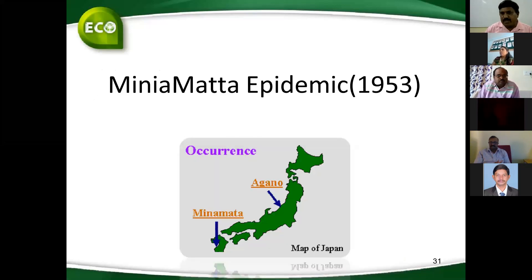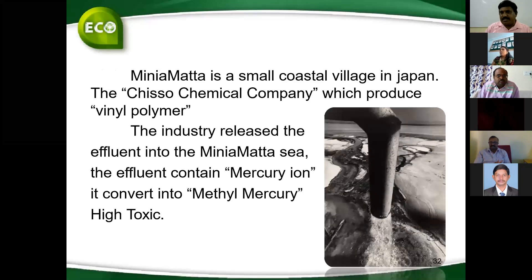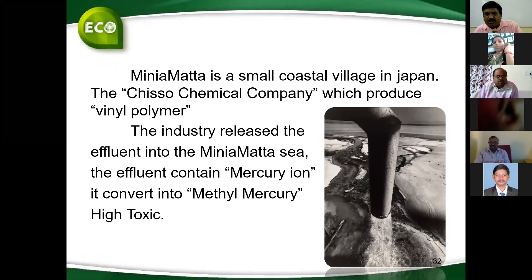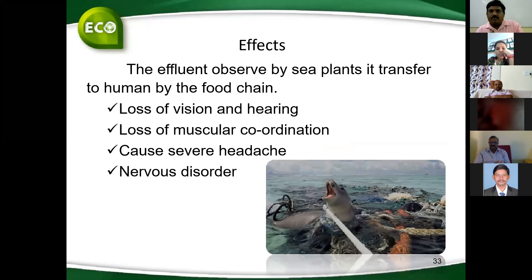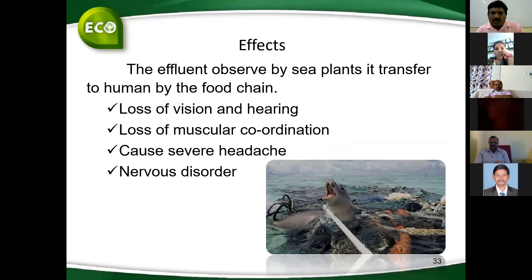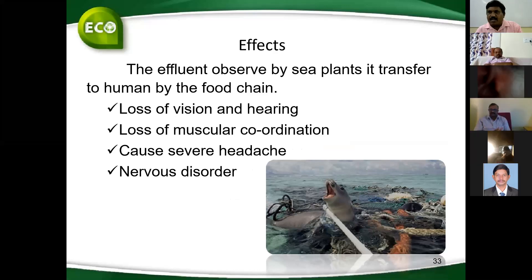The Minamata epidemic in 1953 occurred in a small coastal village in Japan. A chemical company producing vinyl polymer released effluent containing mercury ions into the Minamata sea. The mercury converted into methyl mercury — a highly toxic form — which affected sea plants and transferred through the food chain, causing loss of vision and hearing, muscular coordination problems, and severe attacks. Mercury is a heavy metal that bioaccumulates in thermal plant-like species.